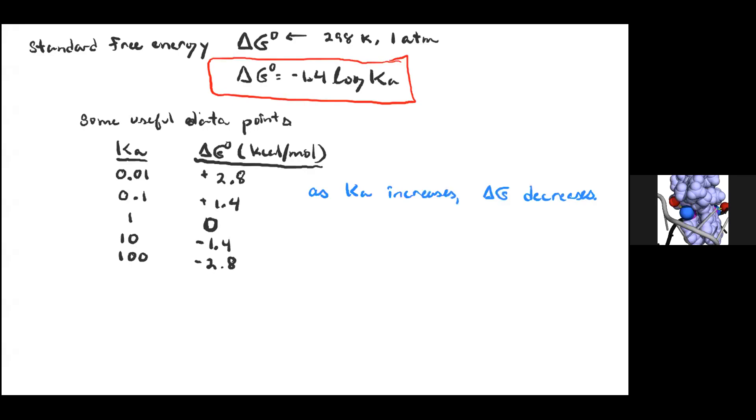Continuing on in lecture six, we've talked about how to relate Ka and pKa to each other and now the change in Gibbs free energy of the system. Now we're going to go in a more qualitative direction and talk about trends and how we might predict the relative acidity of different acids.